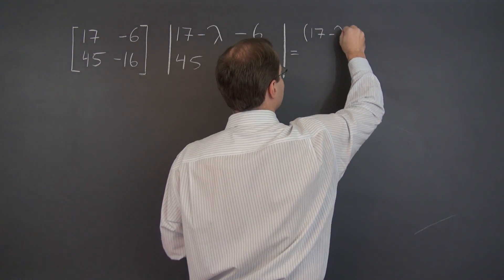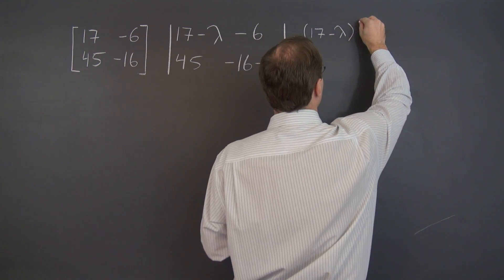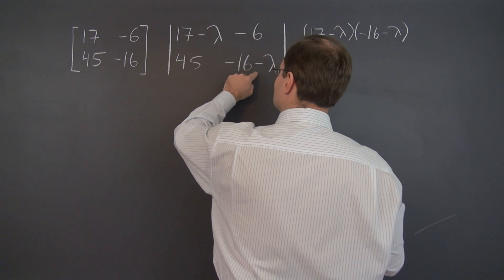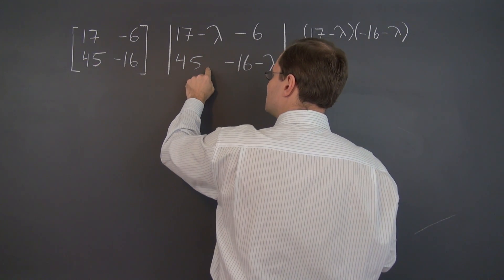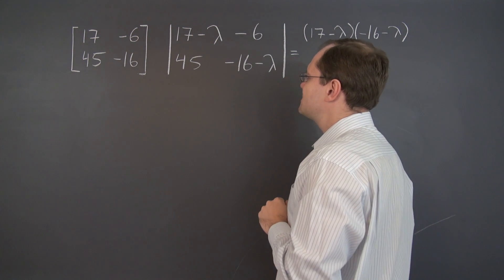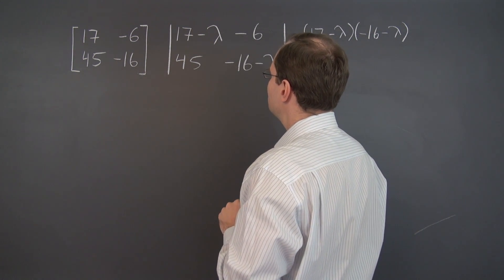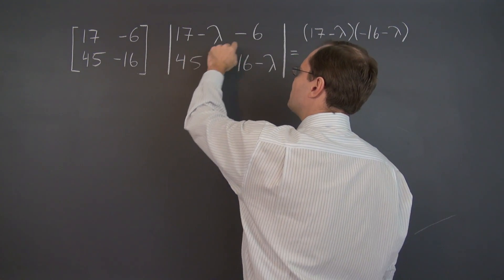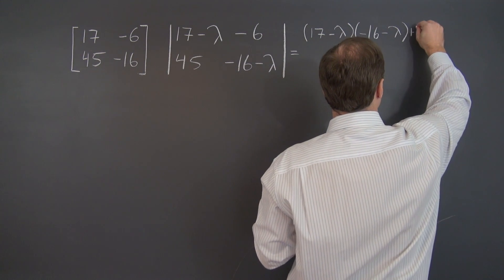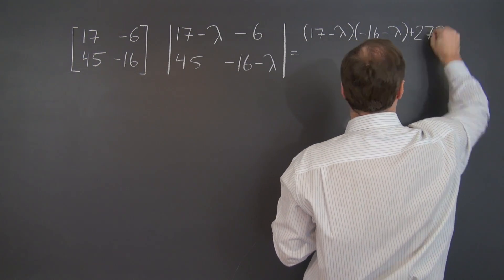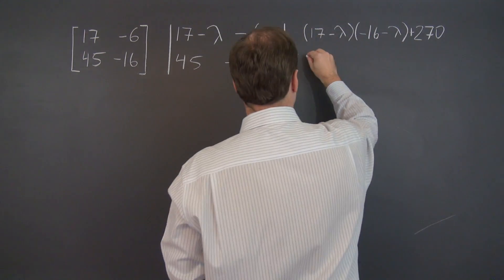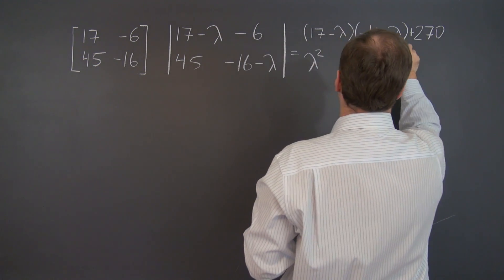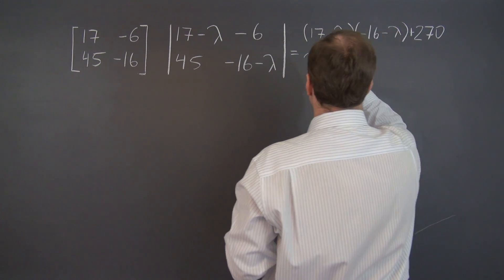This equals 17 minus lambda times negative 16 minus lambda. Of course it's this entry times this minus this times this, and 45 times 6 is 90 times—270. And because it's minus 45 times minus 6, we have to add 270. Simplifying...